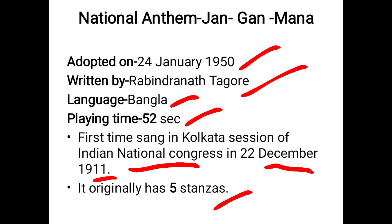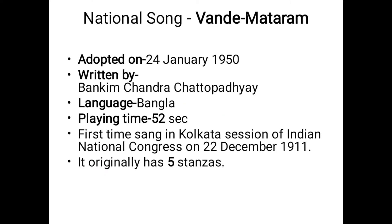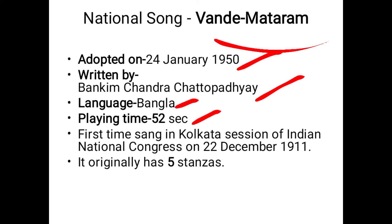Originally Jana Gana Mana has five stanzas but in our constitution only the first stanza is adopted as the national anthem of India. Next is the national song. Vande Mataram is the national song of India, adopted on January 24th 1950, written by Bankim Chandra Chattopadhyay originally in Bengali language. Playing time is 52 seconds. It was first sung at the Kolkata session of the Indian National Congress on December 22nd 1911, and it also has five stanzas.